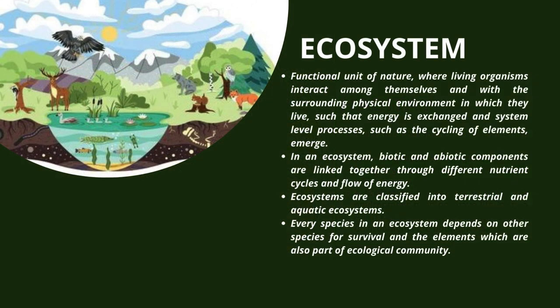Now let us look at what an ecosystem is. It is a functional unit of nature, where living organisms interact among themselves and with the surrounding physical environment in which they live, such that energy is exchanged and system-level processes, such as the cycling of elements, emerge. In an ecosystem, biotic and abiotic components are linked together through different nutrient cycles and flow of energy. Ecosystems are classified into terrestrial and aquatic ecosystems. Every species in an ecosystem depends on other species for survival and the elements which are also part of the ecological community.